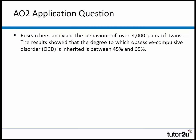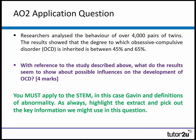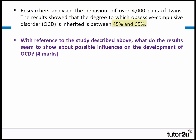Looking at a slightly different application question now — one where you can't really quote much from the extract. Researchers have analysed the behaviour of over 4,000 pairs of twins. The results show that the degree to which OCD is inherited is between 45 and 65%. With reference to the study described, what do the results seem to show about the possible influences on the development of OCD? Another four-mark application question.